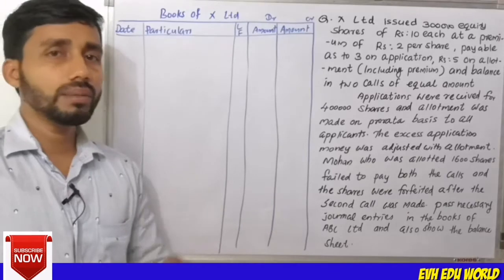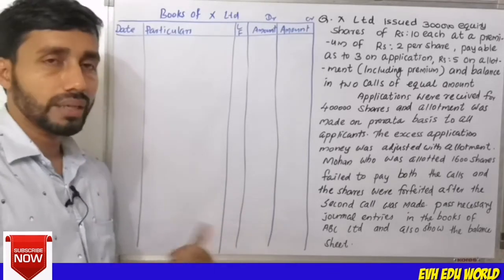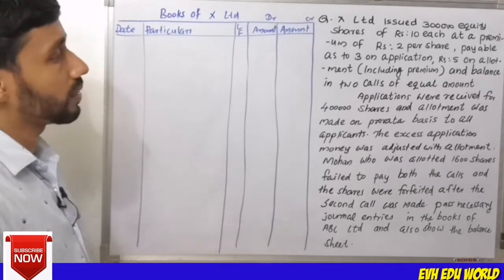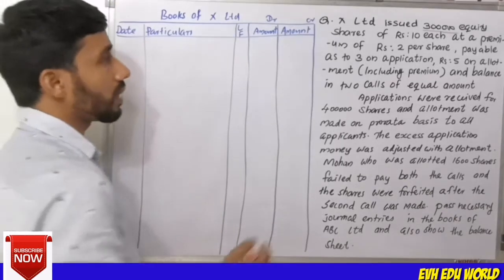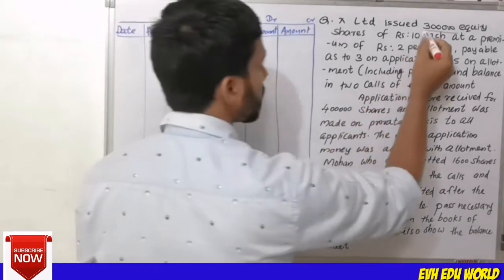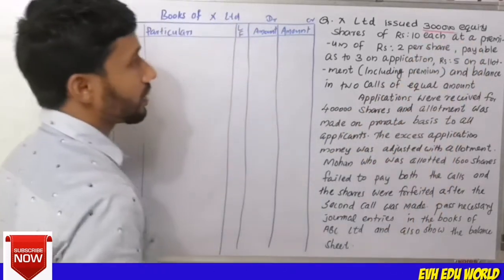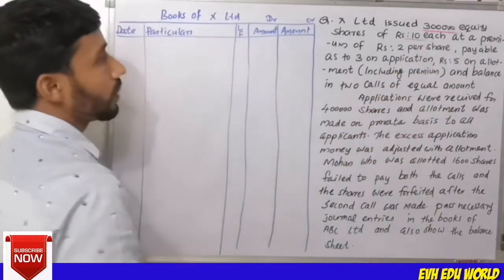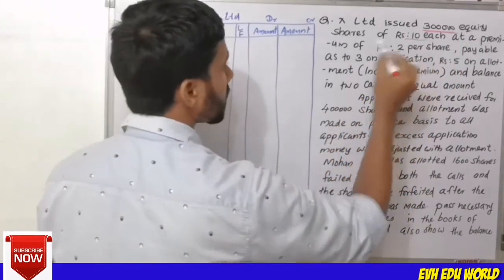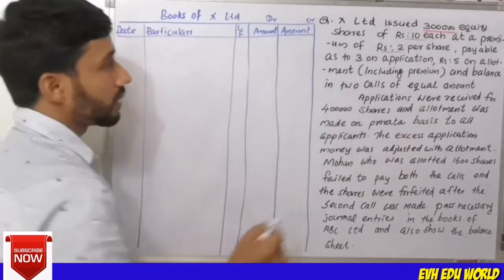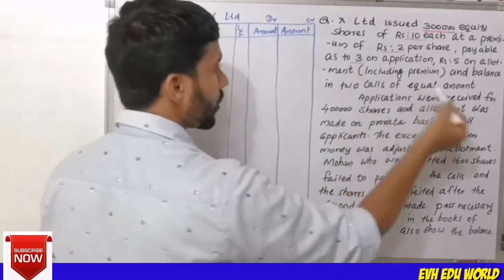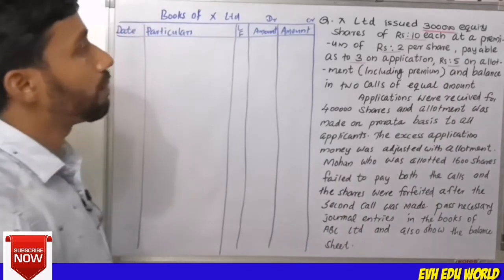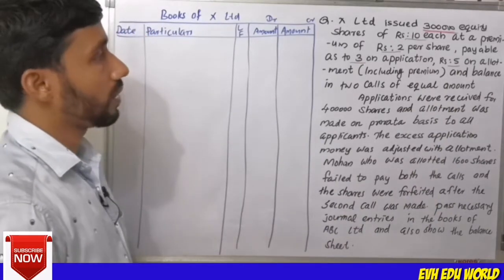Now I will explain how to prepare the balance sheet and the company issue. If you have 3 lakh equity shares of Rs.10 each, the premium is Rs.2 per share. Application money is Rs.3, allotment is Rs.5, and the balance is in 2 calls.